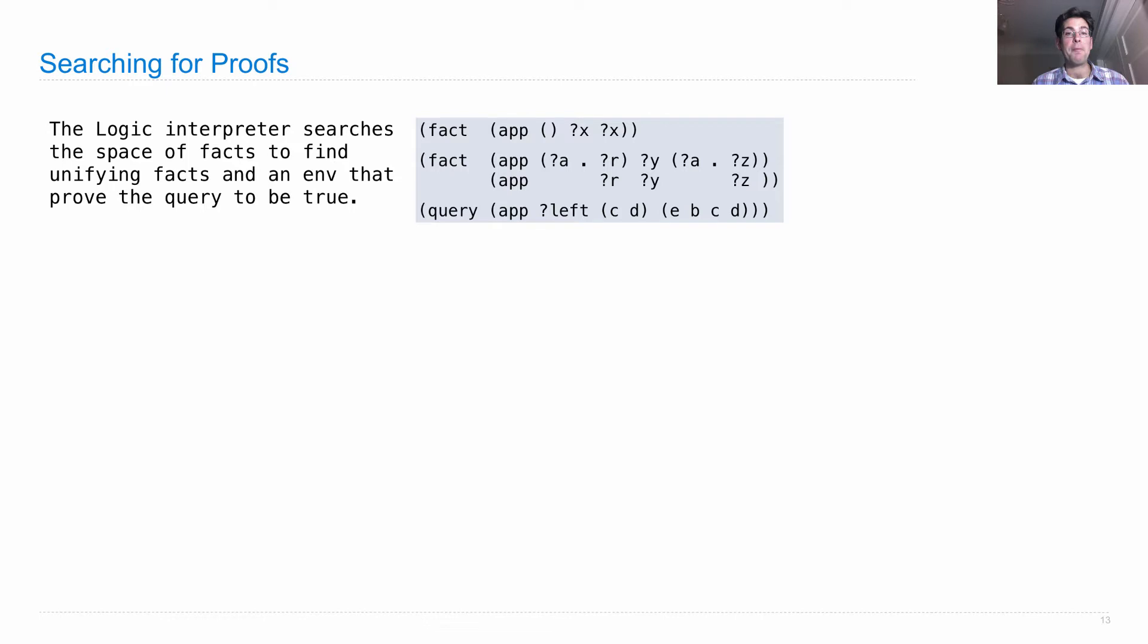So what we're going to do is use the append to form example that I started lecture with, except I'm making it small because I'm going to use up the whole slide. Append to form takes three sub-relations and we append the first two to make the third. So when we ask what's the left thing that I append to cd to get ebcd, it should tell me eb. And here's how it does it.